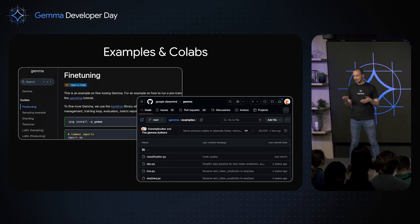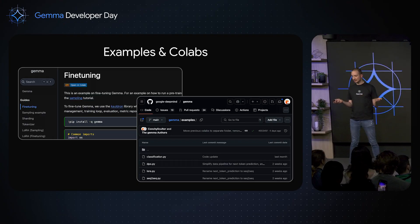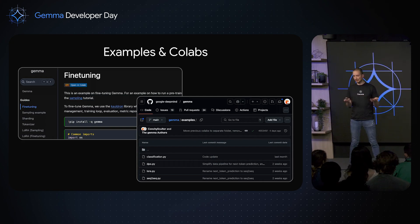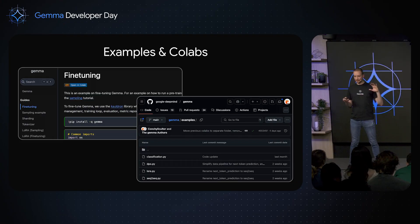On our GitHub, we provide default trainer configs for the most common use cases like supervised fine-tuning, multi-modal classification, DPO, and more. We also have a collection of Colab notebooks that explore specific features of the library in more detail.